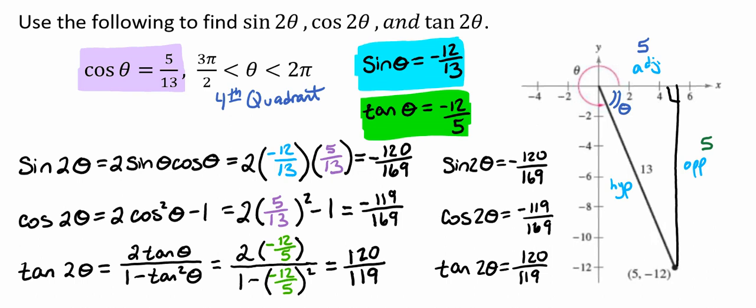And so we see that the sine of 2 theta equals negative 120 over 169, the cosine of 2 theta equals negative 119 over 169, and the tangent of 2 theta equals 120 over 119.